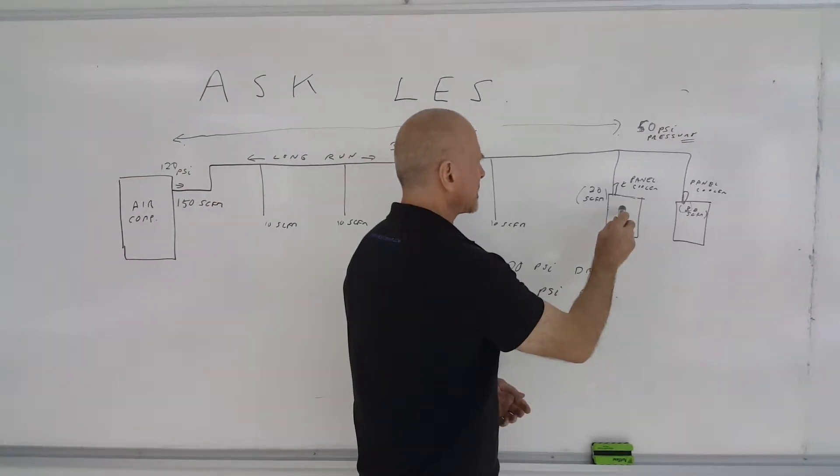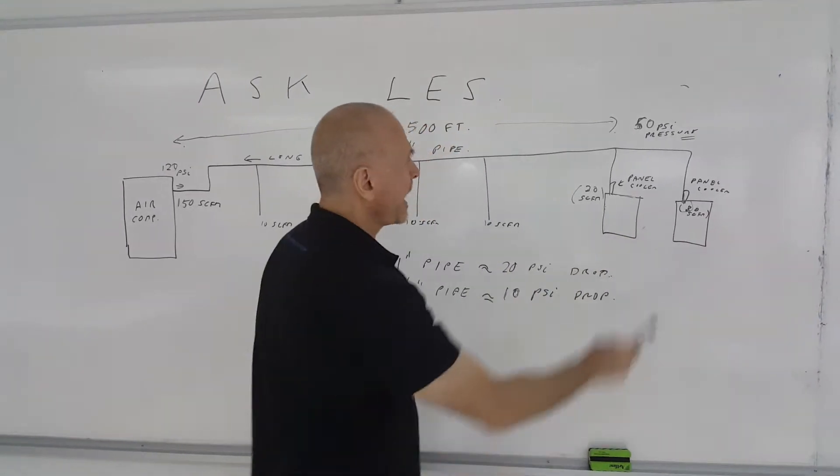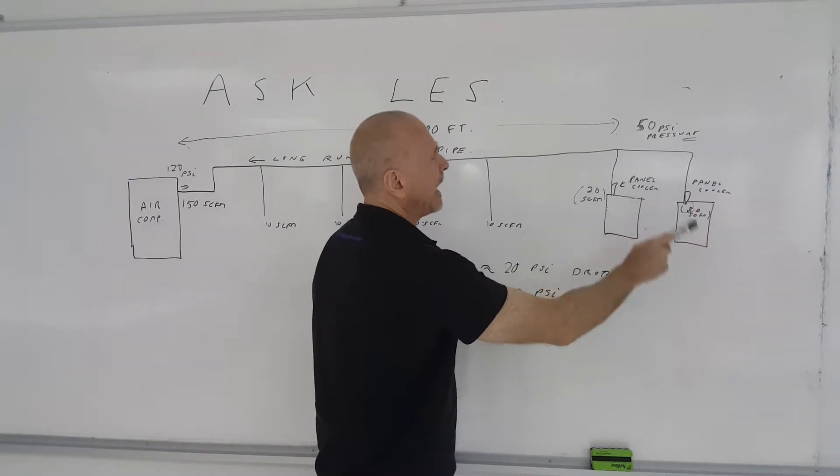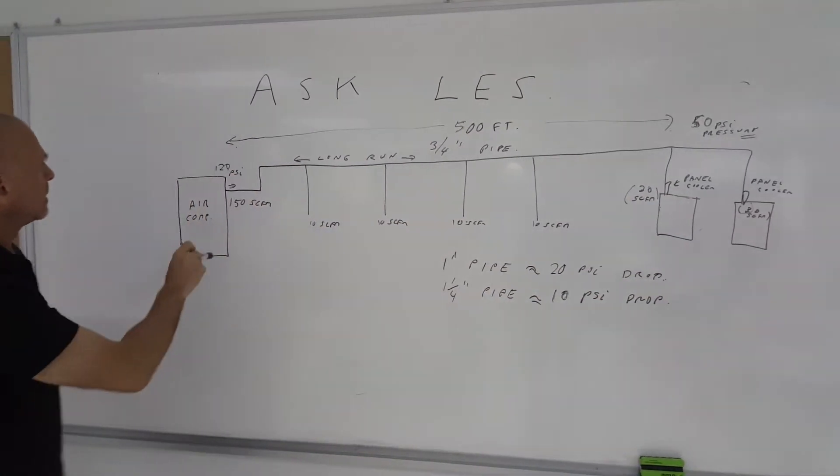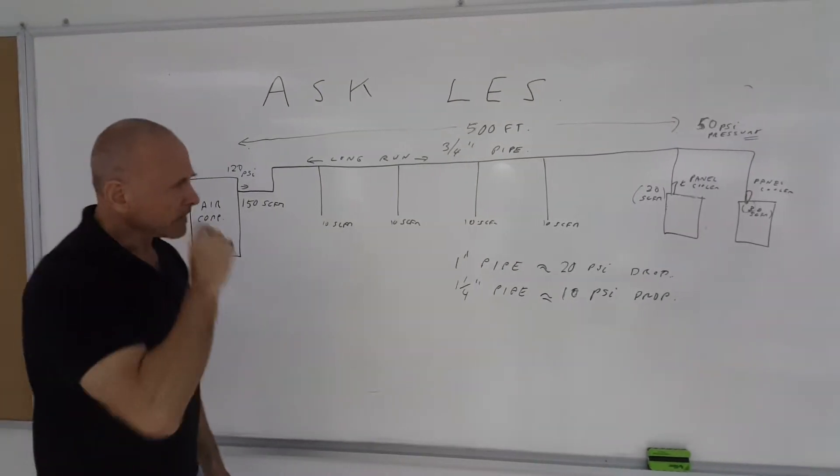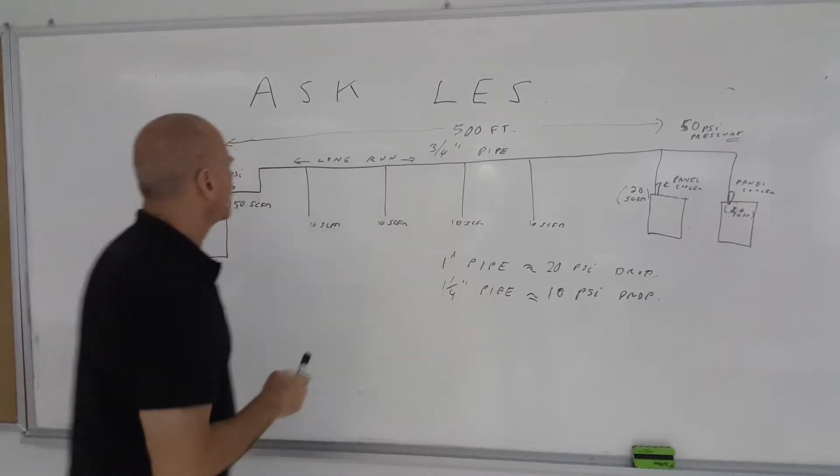So, they installed a 30 CFM cooler on each of two control panels. However, the panel coolers were at the opposite end of the factory where the compressor was located. And they were having some problems. They weren't getting the pressure that they wanted going into the coolers. Why?